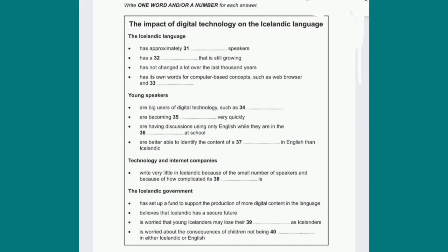Right, everyone. Let's make a start. Over the past few sessions, we've been considering the reasons why some world languages are in decline. And today, I'm going to introduce another factor that affects languages and the speakers of those languages, and that's technology, and in particular, digital technology. In order to illustrate its effect, I'm going to focus on the Icelandic language, which is spoken by around 321,000 people, most of whom live in Iceland, an island in the North Atlantic Ocean.